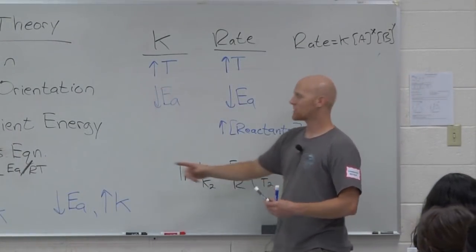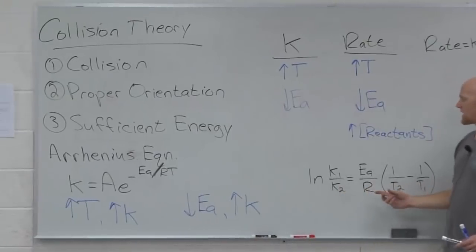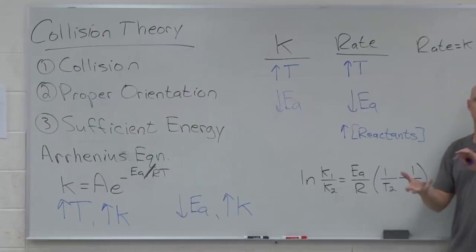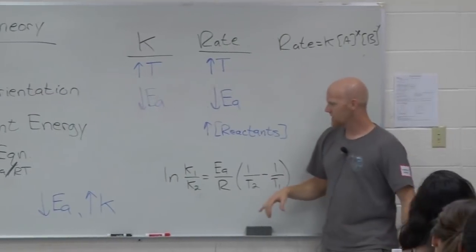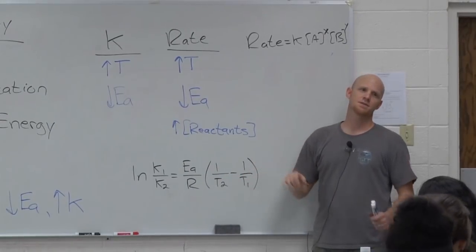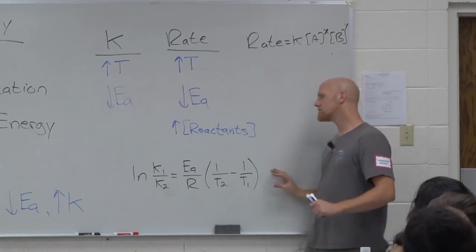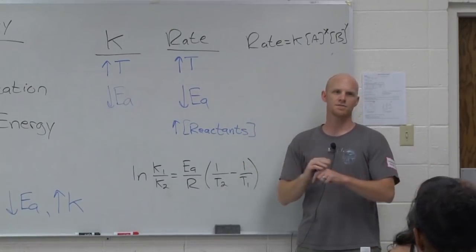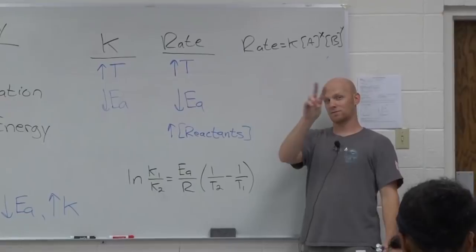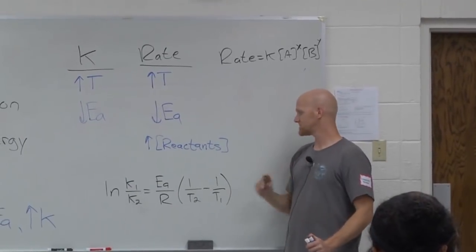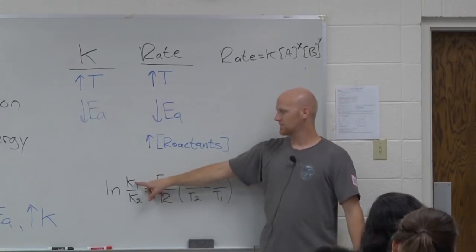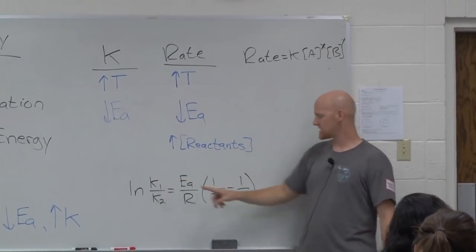From the Arrhenius equation, we can actually extrapolate this lovely equation. You end up taking two sets of the Arrhenius equation and combining them. So in this case, you have two rate constants and two corresponding temperatures. And usually we give you everything you need in this equation except for one thing, and we ask you to solve for that one thing. So I'm not going to actually work an example, but I'm going to tell you the two things where students screw up. Temperatures have to be in units of what? Got to be Kelvin.